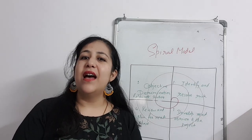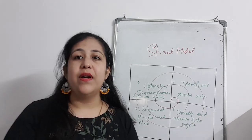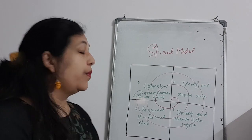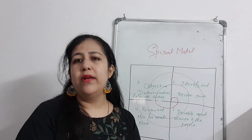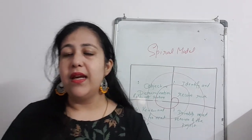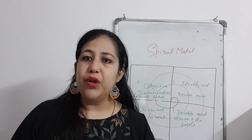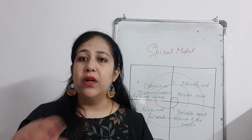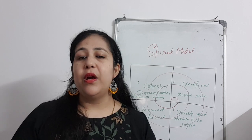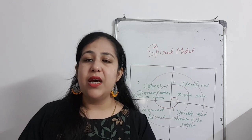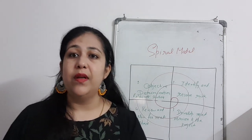Hi all, this is Anshali and in this video we will look at the spiral model in software engineering. The spiral model is a very important model in terms of getting the requirements from the user and working on them again and again until you have the final requirements and accordingly the final software developed.